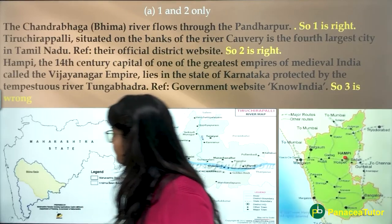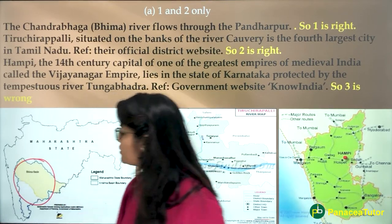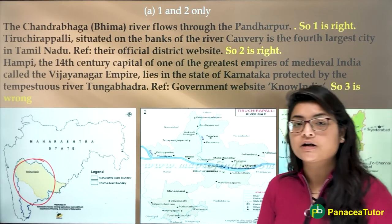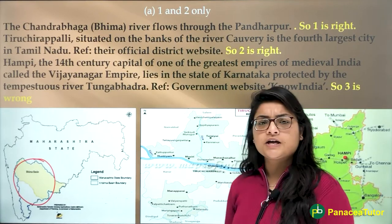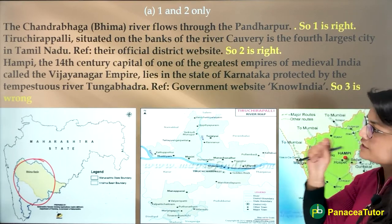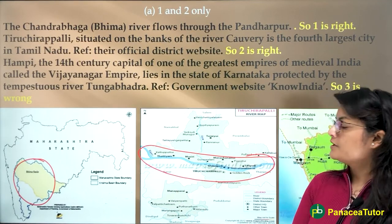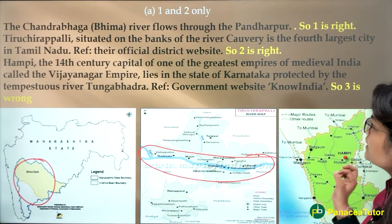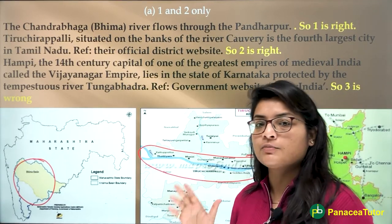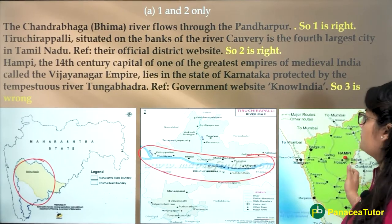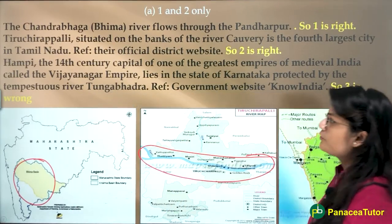Chandrabhaga is the Bhima river located in Pandarpur, Maharashtra — famous for various saint disciples like Namdev. Tiruchipali is in Tamil Nadu, which is again correct. Hampi is the 14th century capital of the great Vijayanagara empire in medieval India. If you have located the state, you would know that Malprabha is not the correct river associated with Hampi. So options one and two are correct.